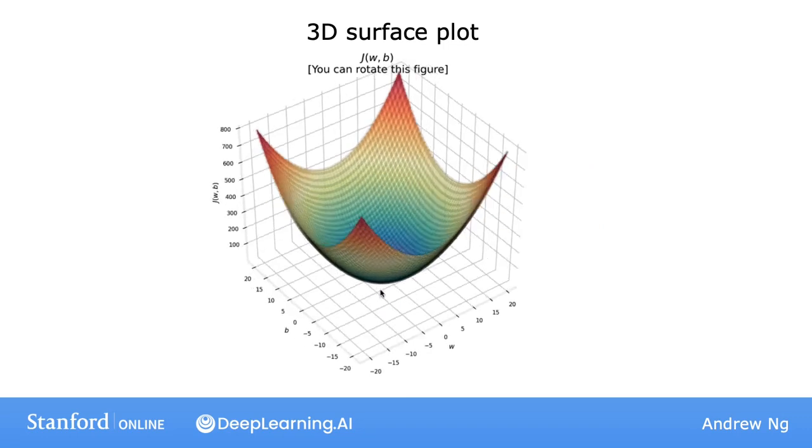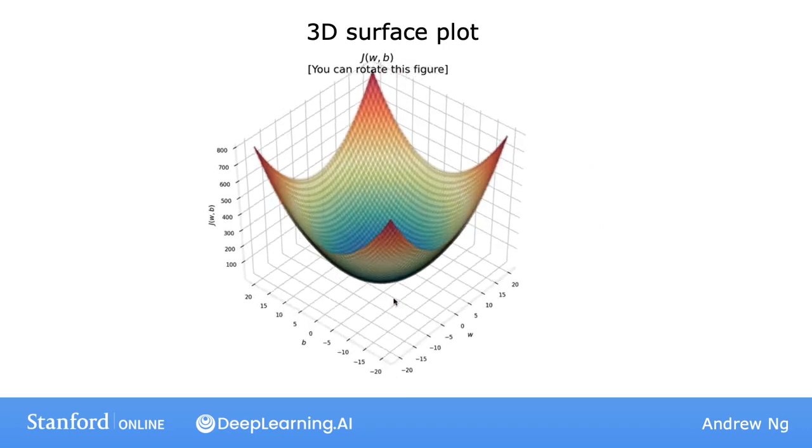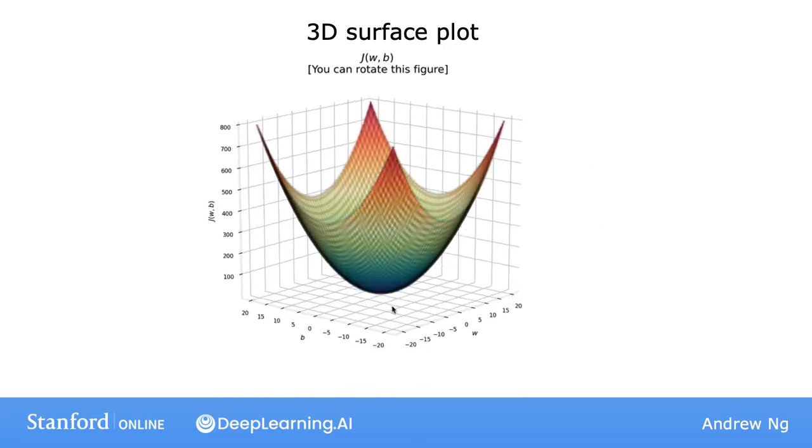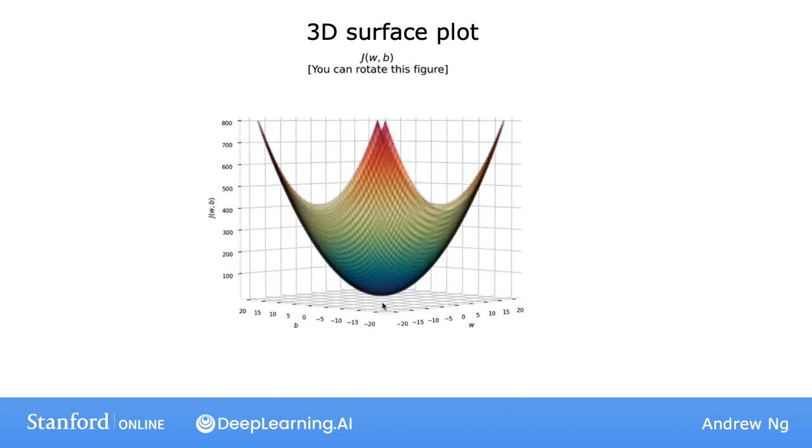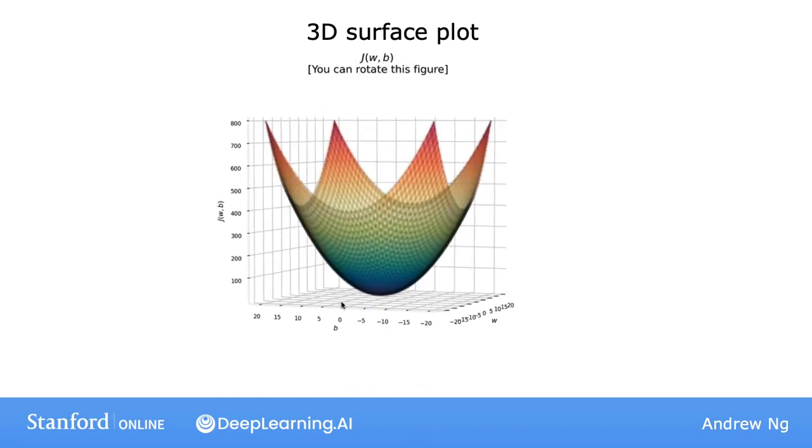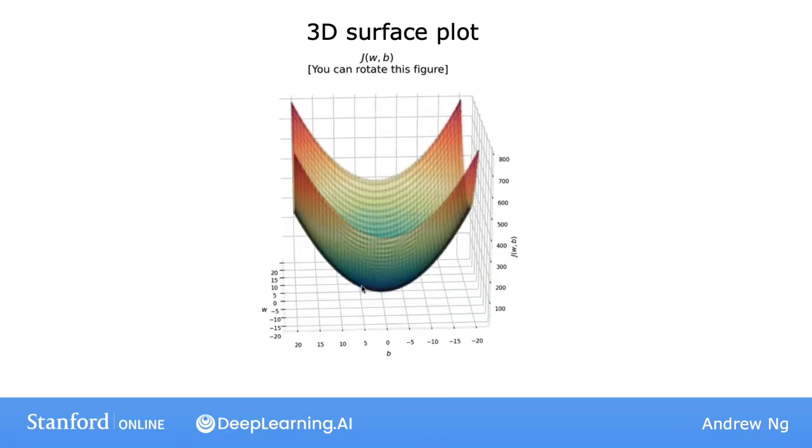Now, in order to look even more closely at specific points, there's another way of plotting the cost function j that would be useful for visualization, which is, rather than using these 3D surface plots,